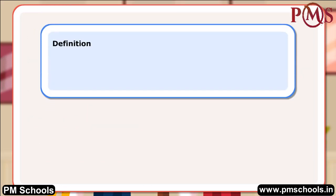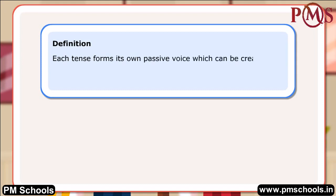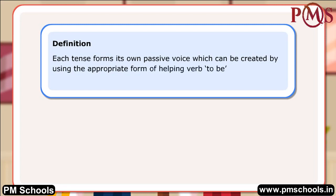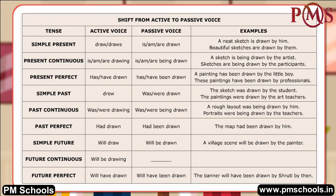Definition: Each tense forms its own passive voice, which can be created by using the appropriate form of the helping verb 'to be' and the V3 past participle. The table shows the formation of sentences in the passive voice for each tense. Let us look at a few sentences.